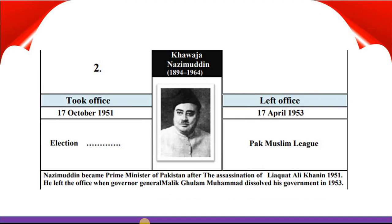Here is the second Prime Minister of Pakistan, Khawaja Nizamuddin. He took office 17th October 1951 and left office 17th April 1953. He was also elected by elections and belongs to Pakistan Muslim League. Nizamuddin became Prime Minister after the assassination of Liaquat Ali Khan in 1951. He left office when Governor General Malik Ghulam Muhammad dissolved his government in 1953.